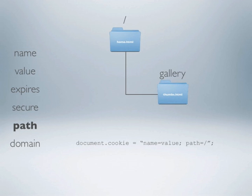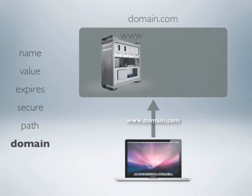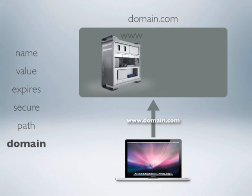The very last attribute of cookies is the domain attribute, which is probably the one you'll use least often. If I have a client that sends a request to a server called www that's part of domain.com, the www server answers it, sends a page back, possibly telling the client to create a cookie. Then if the client makes another request to the same domain, the same server will pick it up and the client will send that cookie to the server, so everything works just like we've been describing.